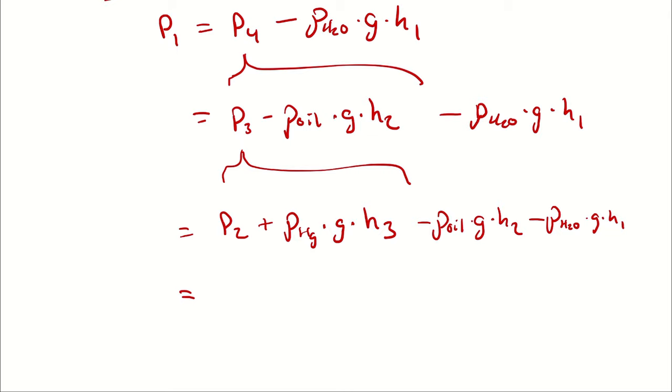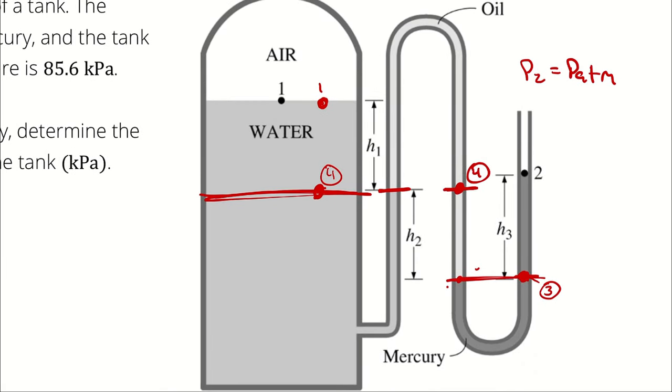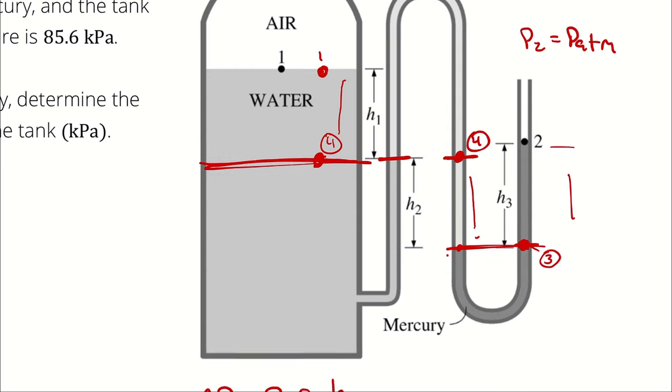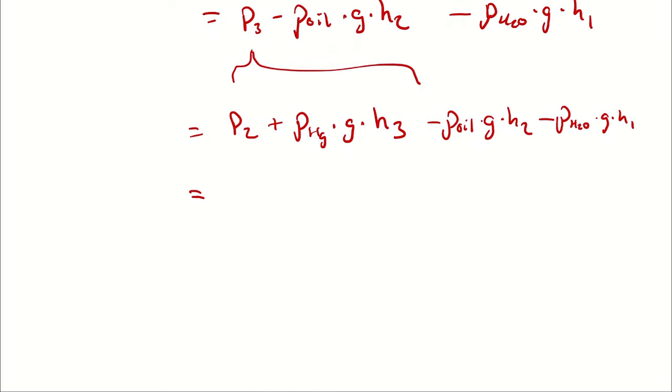Note that once you get a little bit more proficient at this, you can step your way through one of these manometers and add any time you go down and subtract any time you go up. So in this situation, you could have thought of it like, well, we're starting with P2, and then we are adding density of mercury times gravity times H3 because we're going down. And then we are subtracting the density of oil times gravity times H2 because we're going up. And then we're subtracting again density of water times gravity times H1 because we're going up. And that would have yielded the same result. But that's enough talking. It's math time.